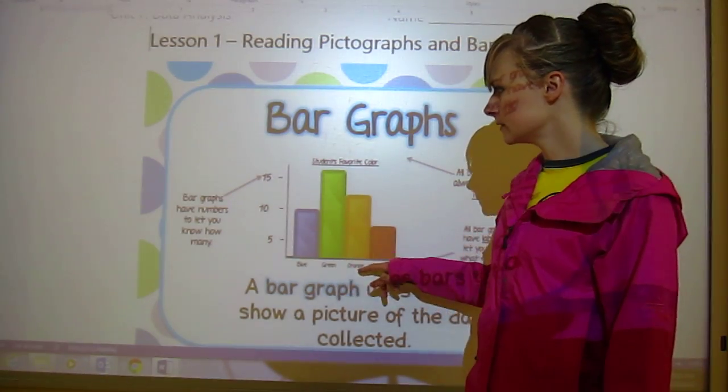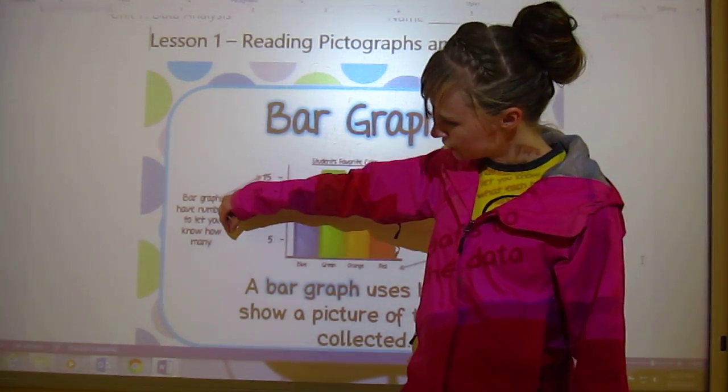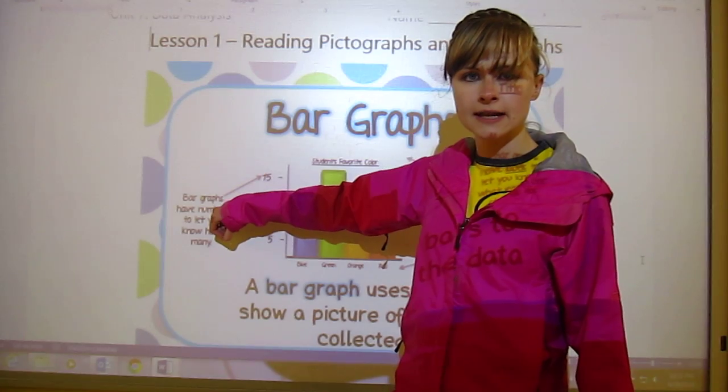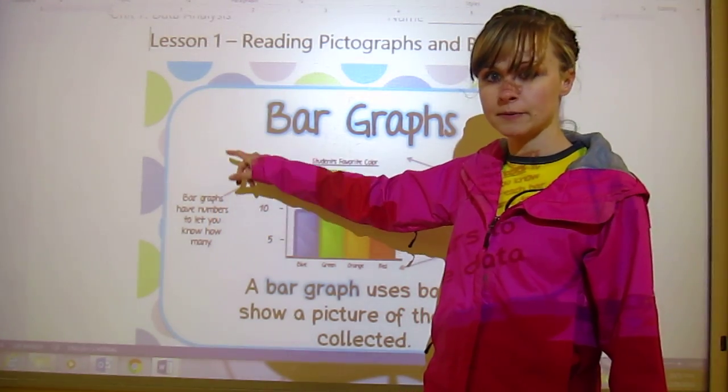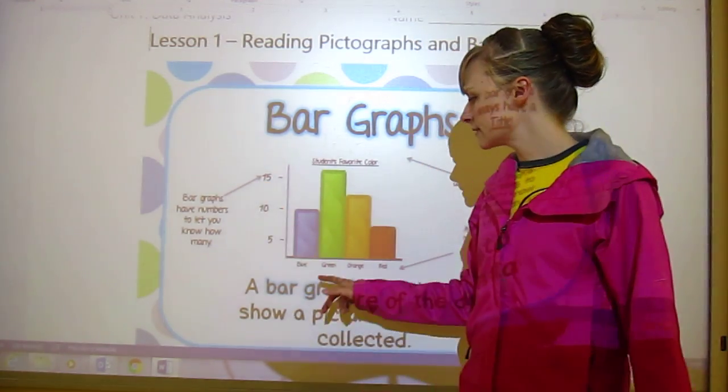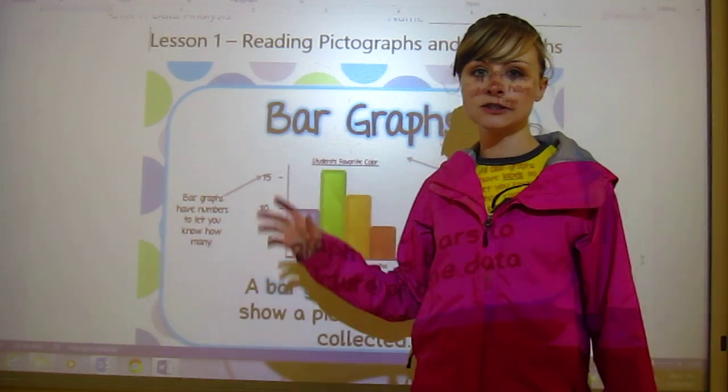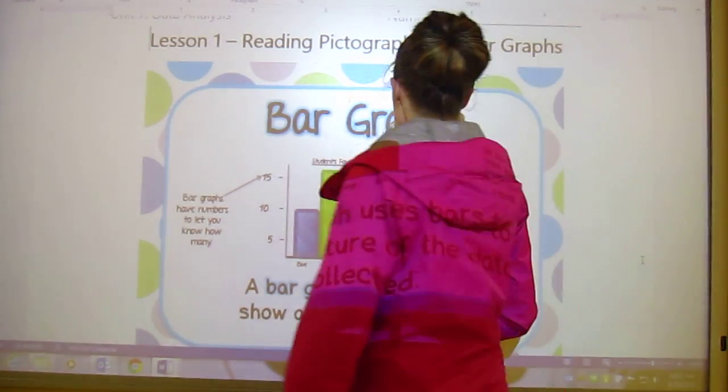This should also be labeled. This one should tell you, there should be something written saying this is how many students, the number of students, and maybe this is their favorite color. So it should have the labels. This one doesn't, but I chose it because of the rest of the stuff and how clear it is.